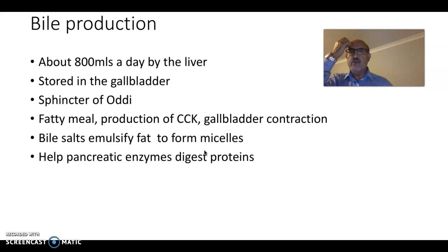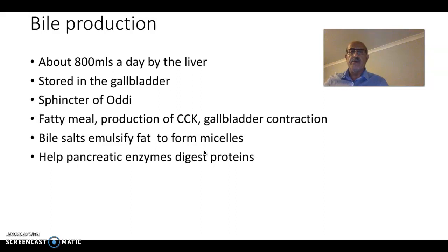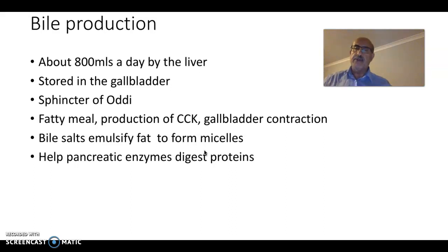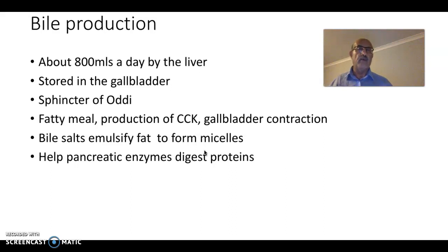The first thing we need to understand is bile production. About 800 ml of bile are produced by the liver on a daily basis in an adult human. That bile gets stored in the gallbladder. The sphincter already has a resting pressure, and that pressure controls the flow of bile, so the gallbladder acts as a reservoir keeping bile until the next meal.